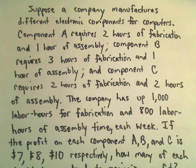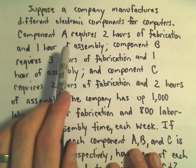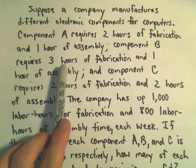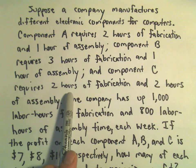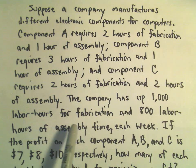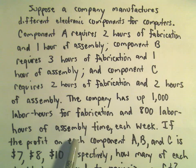Suppose a company manufactures different electronic components for computers. Component A requires 2 hours of fabrication and 1 hour of assembly. Component B requires 3 hours of fabrication and 1 hour of assembly. Component C requires 2 hours of fabrication and 2 hours of assembly. The company has up to 1,000 labor hours for fabrication and 800 labor hours of assembly time each week.